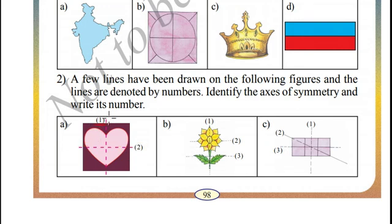Let us see 1. When we fold this figure vertically, both the shapes match. So 1 is the axis of symmetry.